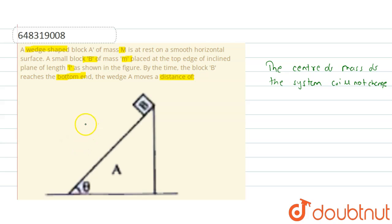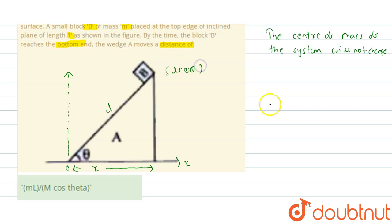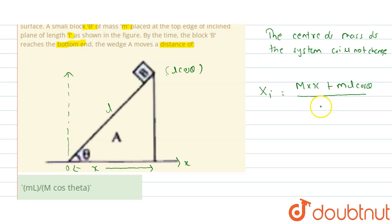Now students, let us consider this is the initial position. Let this be our Y axis and this is the X axis. The wedge A is at a distance X from the origin, and block B has the X coordinate of its position as L cos θ. So the initial X coordinate of the center of mass will be: capital M multiplied by X plus small m multiplied by L cos θ, whole divided by total mass capital M plus small m.